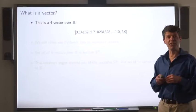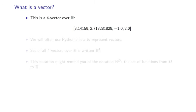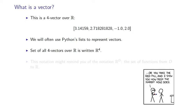So, what's a vector? This is what you might think is a vector. A list of numbers, in this case four numbers, this is called a four vector over the field of real numbers. We'll use Python's list sometimes to represent vectors using this notation.